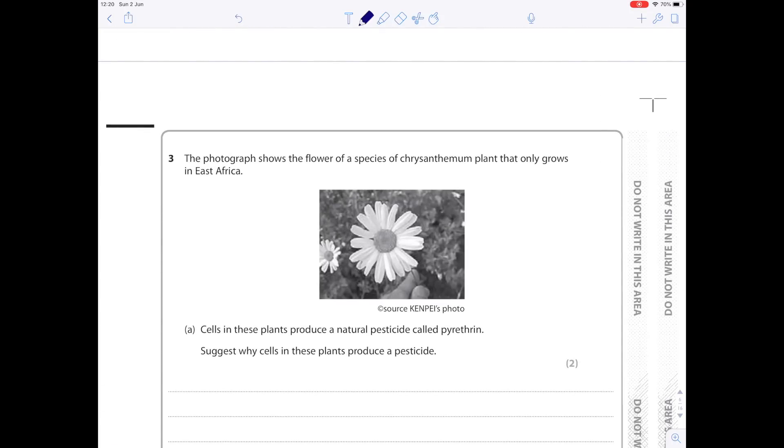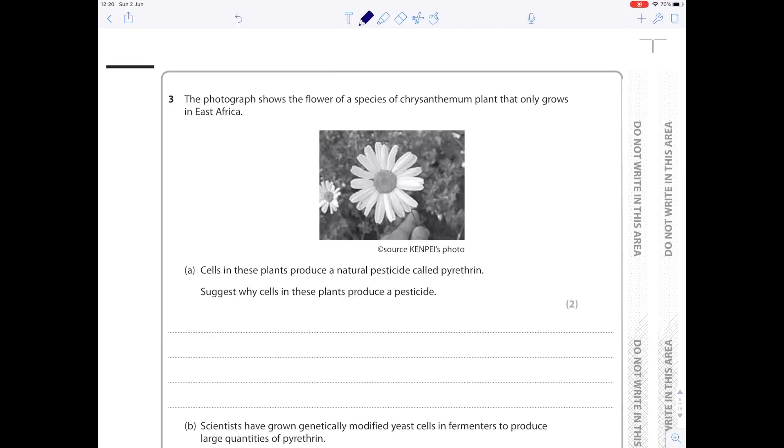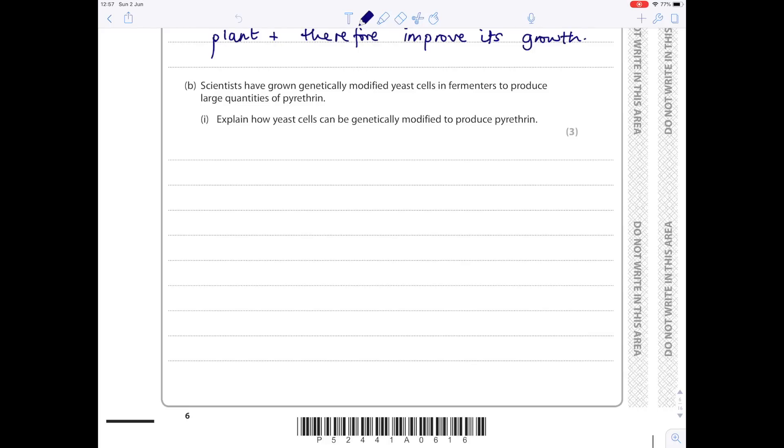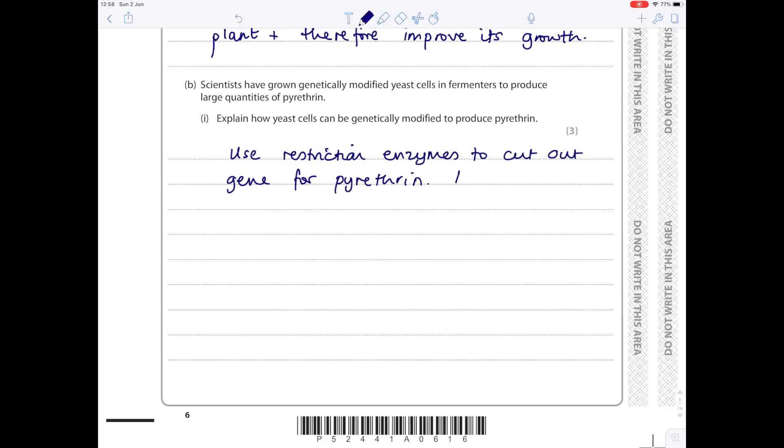The photograph shows the flower of a species of chrysanthemum plant that only grows in East Africa. Cells in these plants produce a natural pesticide called pyrethrin. Suggest why cells in these plants produce a pesticide. So what is a pesticide? Well, it's a substance which kills pests. And why would you want to kill pests? Because they would eat the plant and therefore damage it. Scientists have grown genetically modified yeast cells in fermenters to produce large quantities of pyrethrin. Explain how yeast cells can be genetically modified to produce pyrethrin. Hopefully you've learned your perfect answer for genetic modification. So in order to genetically modify the yeast cells, first of all, we need to obtain the pyrethrin gene using restriction enzymes. And then we need to insert that pyrethrin gene into a plasmid, which acts as a vector, using a second enzyme known as ligase.